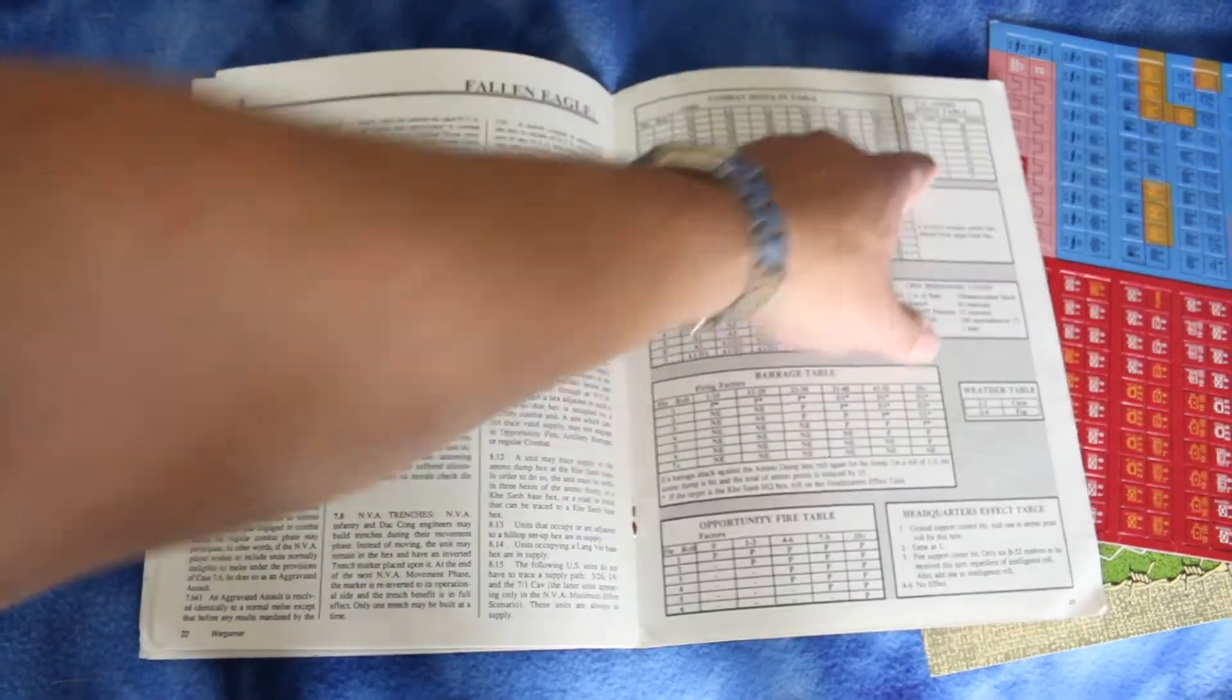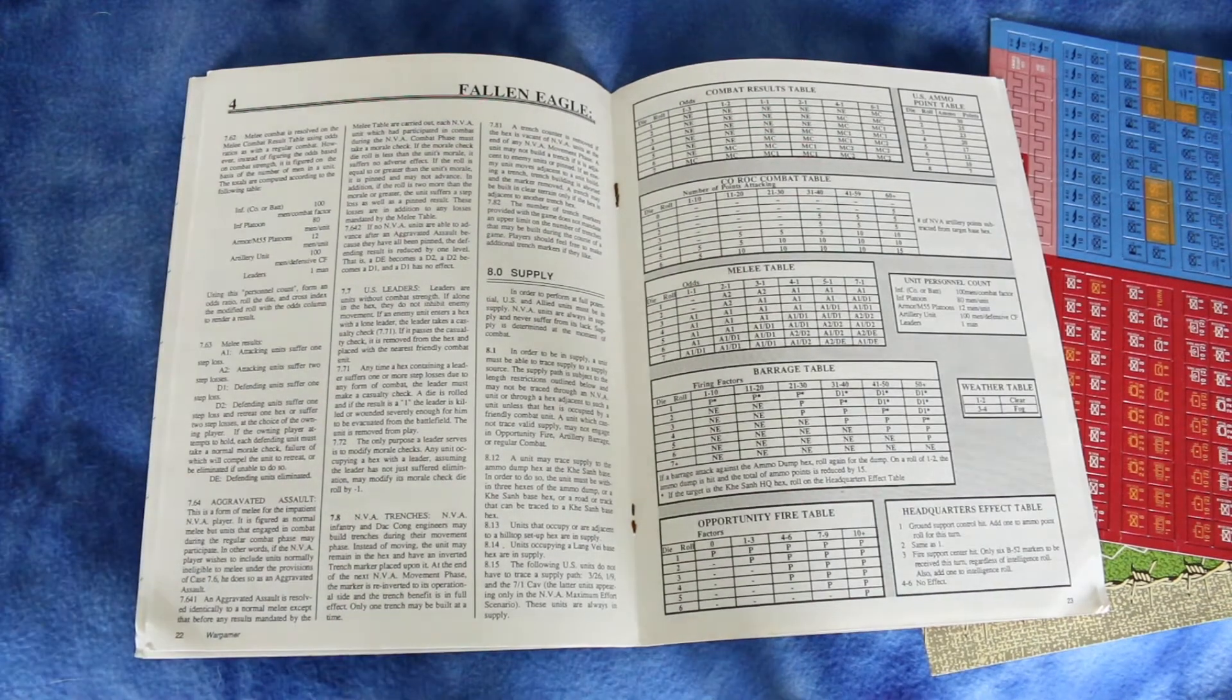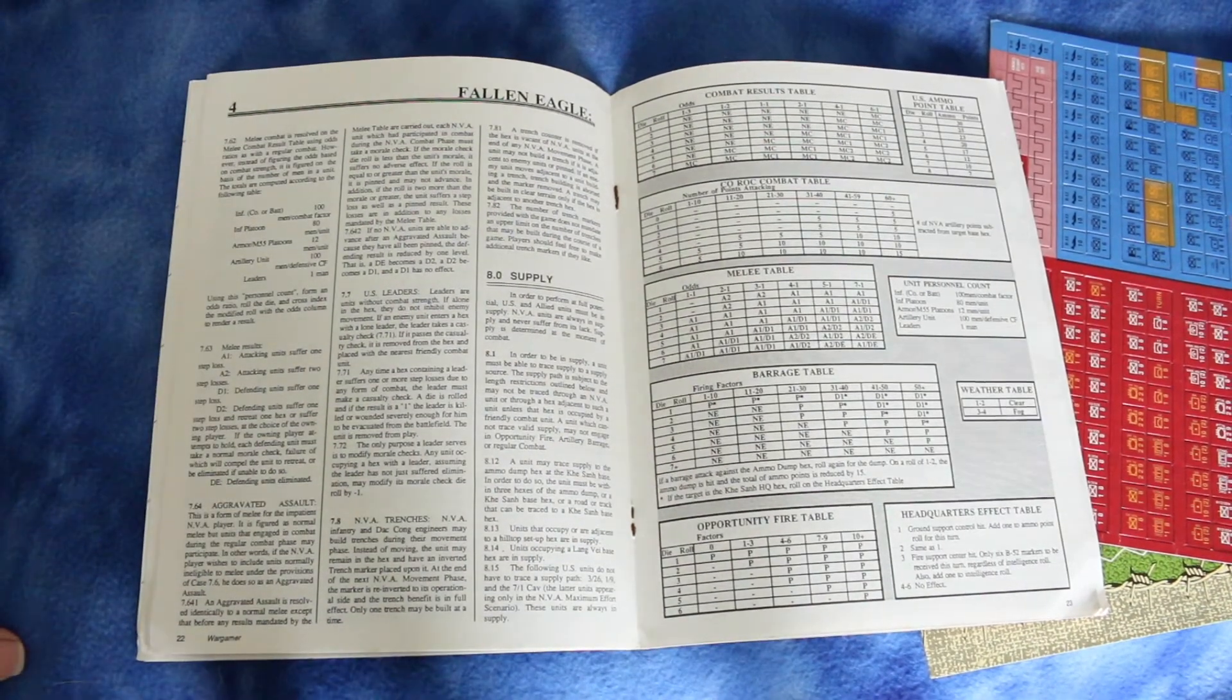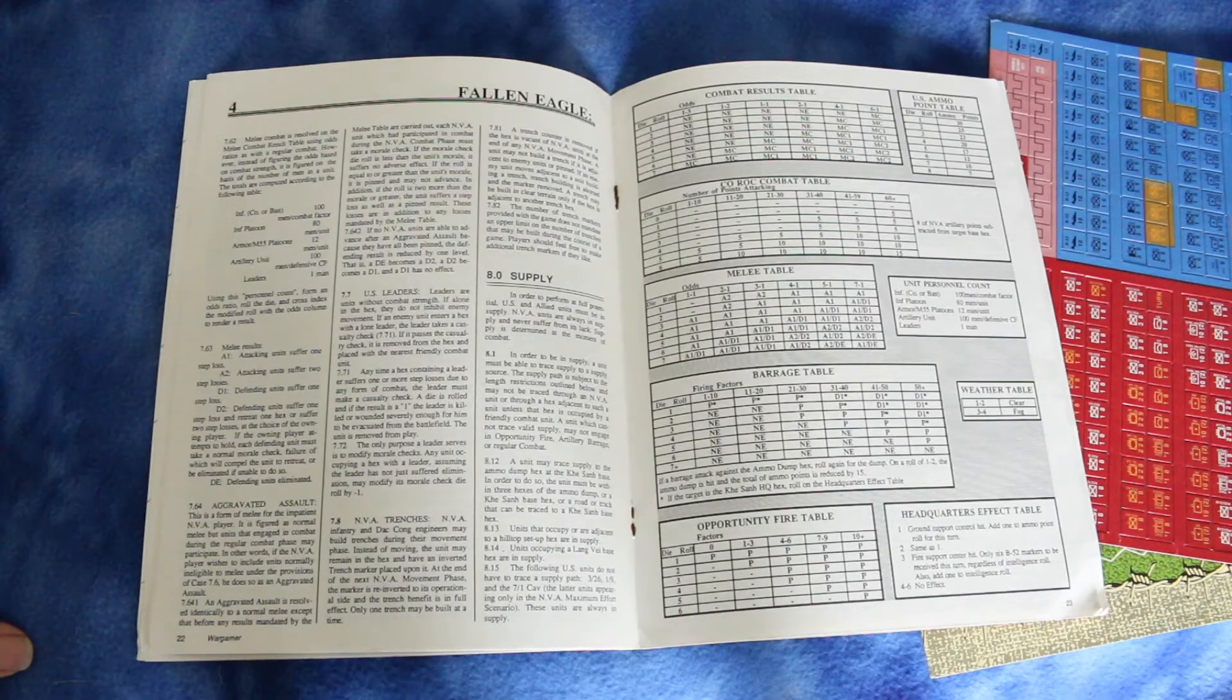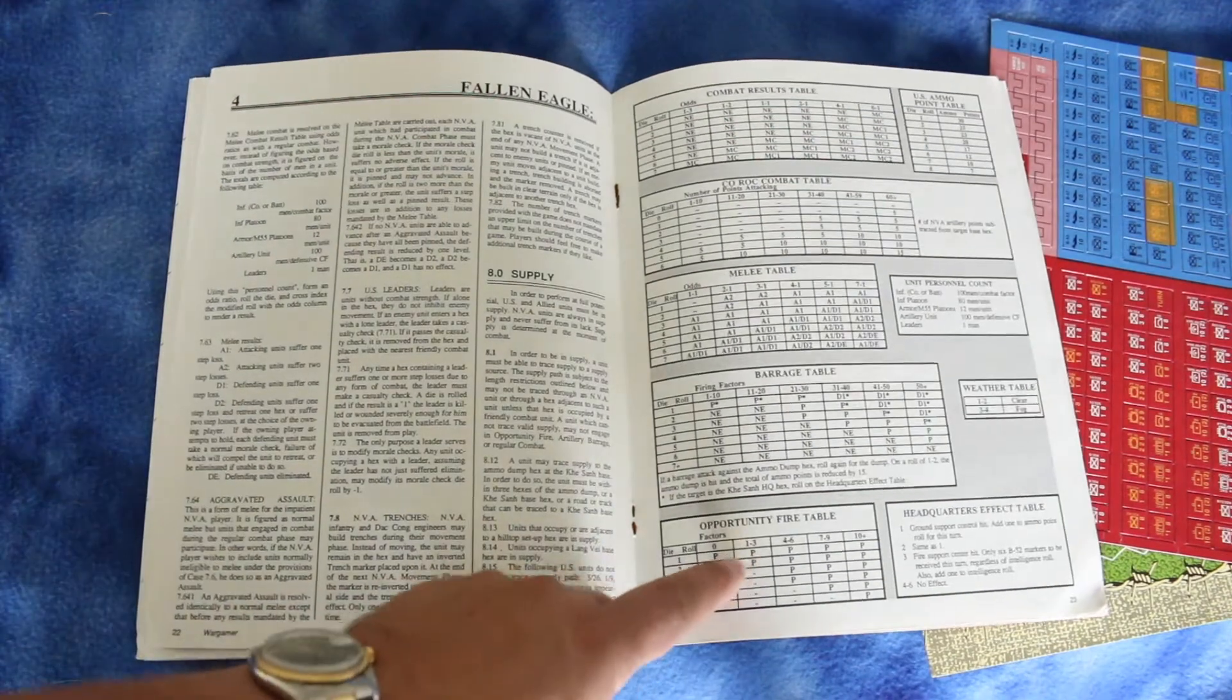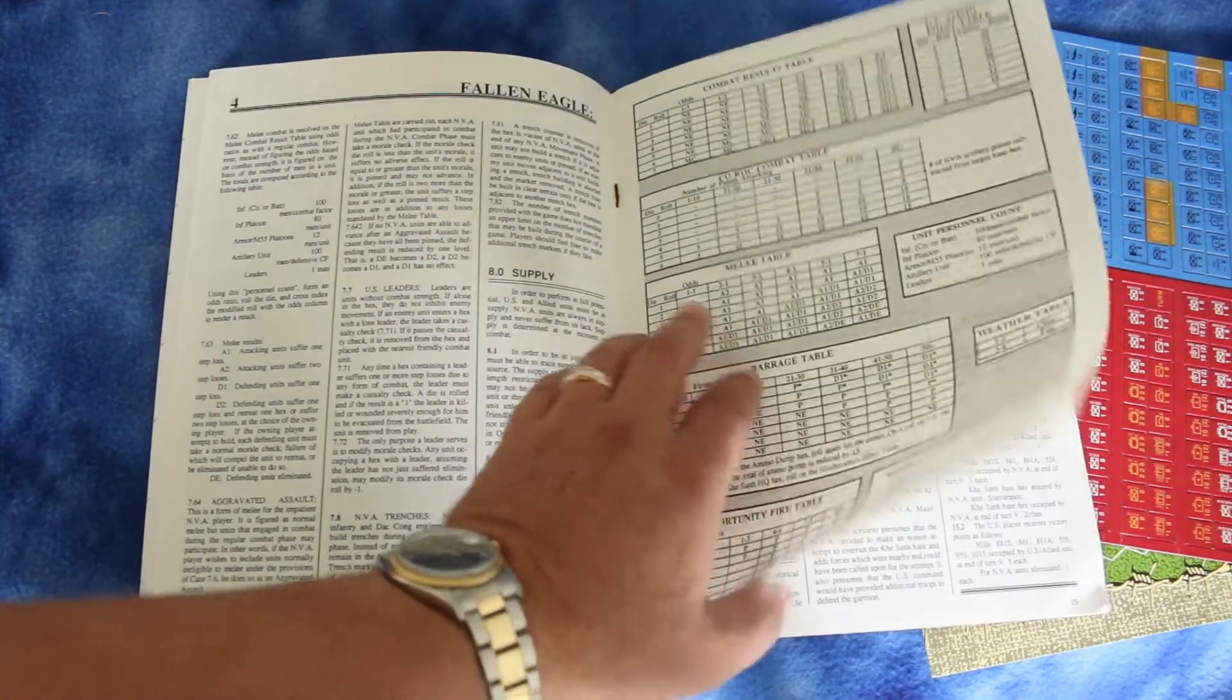Here's the tables, okay. So you got a combat results table, US ammo point table, Coroc combat table, melee table, unit personnel count, barrage table, weather table, opportunity fire table, and a headquarters effects table. It's weird they have that in the middle of the rules. Usually you like to have them at the last page.